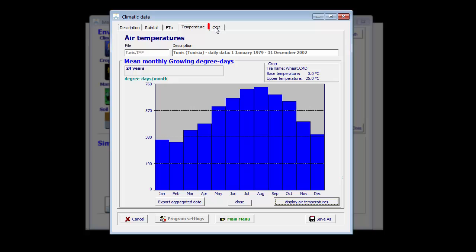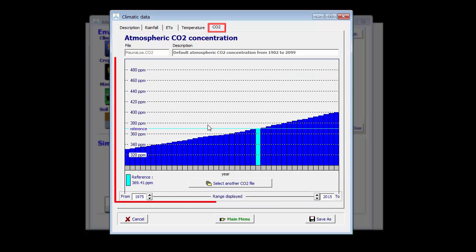Finally, in the CO2 tab sheet, we see the variation of the CO2 concentration over the different years, from 1975 up to 2015.